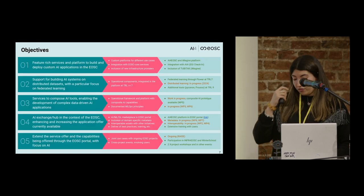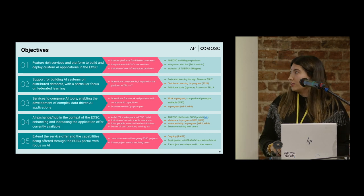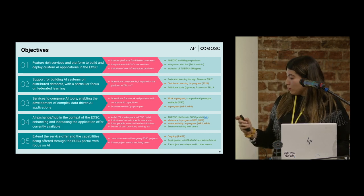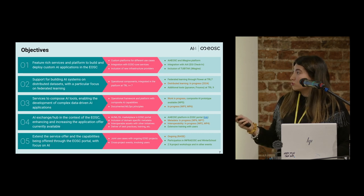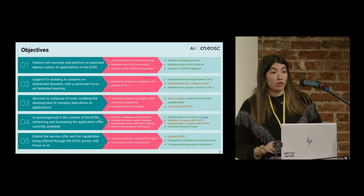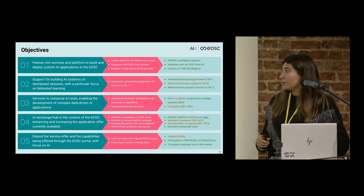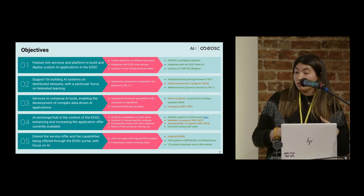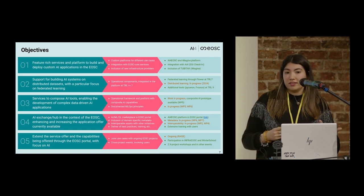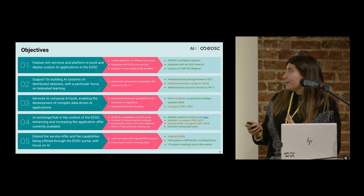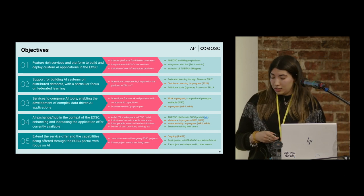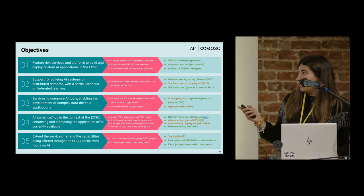The project has five main objectives, and I'm only going to focus on the second one, with which we want to support scientists to build AI systems — machine learning and deep learning models — which can be trained on distributed datasets. We have a particular focus on federated learning for this task, and we are using Flower for implementing the federated learning support.